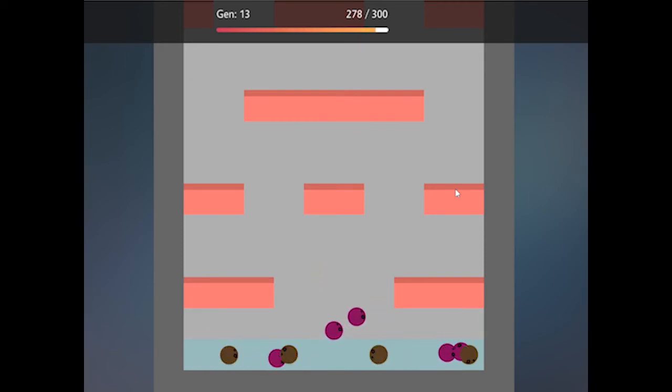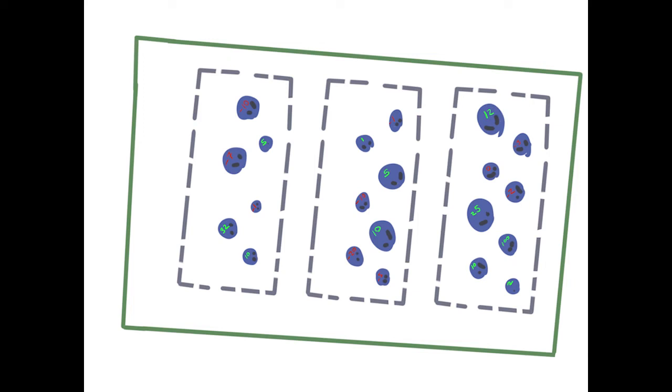The first generation, you see a couple of, most of them are still, they don't do anything, but the ones that get the furthest get assigned a score. Once we've collected all those scores, we sort the organisms by their scores relative to their own species.